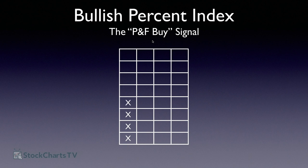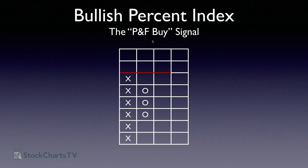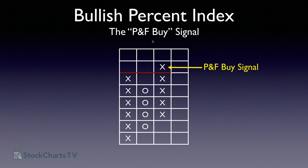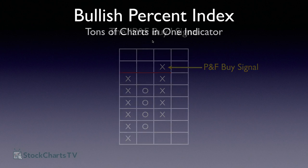Here's how a PnF buy signal works: a stock is in a rising column of X's, then reverses enough to add three O's in a new column, then turns back up. When that new column of X's rises above the level of the previous column of X's, that's a PnF buy signal — fairly simple, but clearly bullish since the stock has gotten higher than in its previous uptrend.